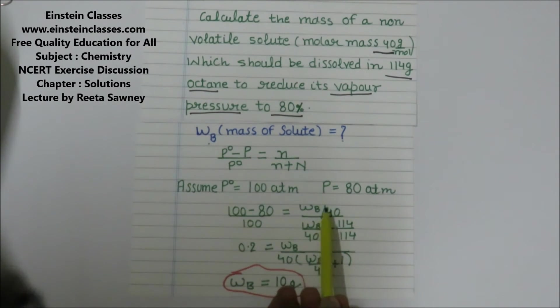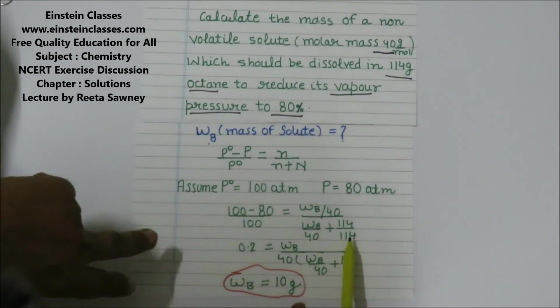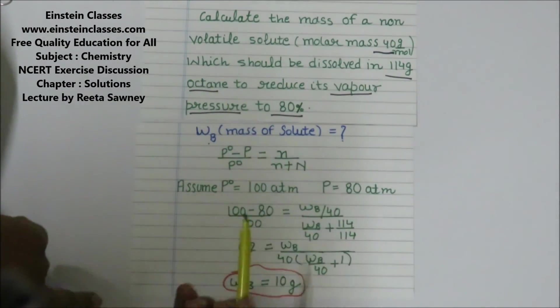We need to find out the mass of solute. Mole of solute is WB/40, where 40 is the molar mass. And the mole of solvent is 114/114. 114 is the mass of octane and the molar mass of octane.